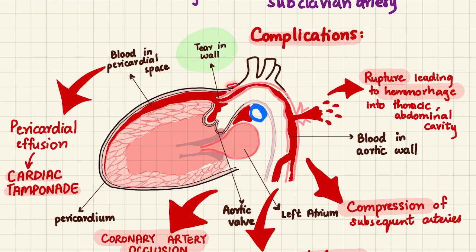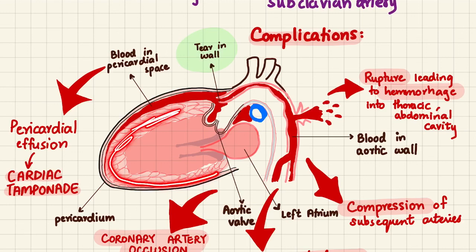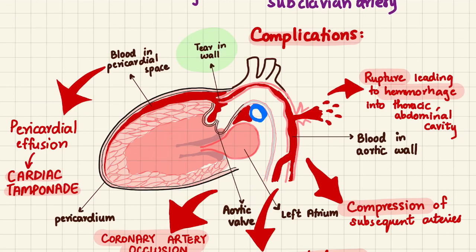Let me explain this diagram. This is the left ventricle, this is the left atrium, this is the aortic valve, and this is the pericardial space or pericardial cavity, which is filled with blood — I'll explain why shortly. This is the myocardium, this is the blood in the ventricle, and this is the ascending aorta.